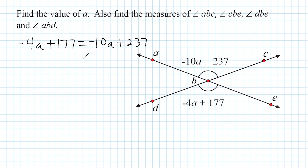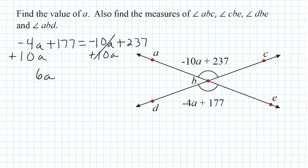We're going to take the negative 10A and move it to the left side to combine it with negative 4A, so we only have to deal with one variable. The opposite of negative 10A is positive 10A, which eliminates it from the right-hand side. We add 10A on the left-hand side: positive 10A and negative 4A gives a total of positive 6A. We still have plus 177 on the left and positive 237 on the right.